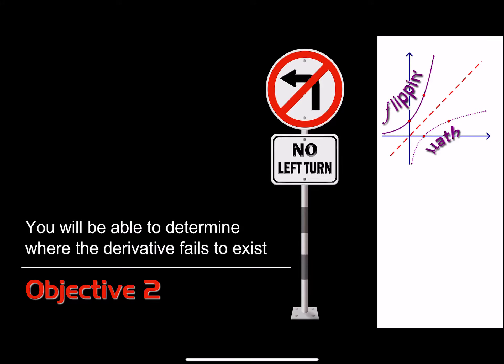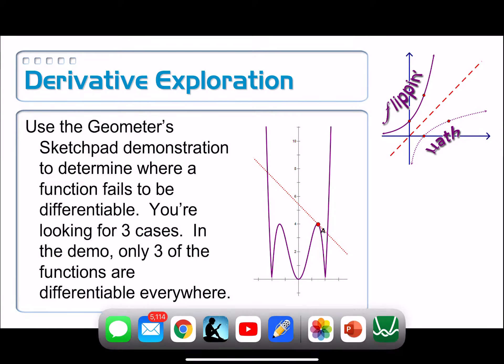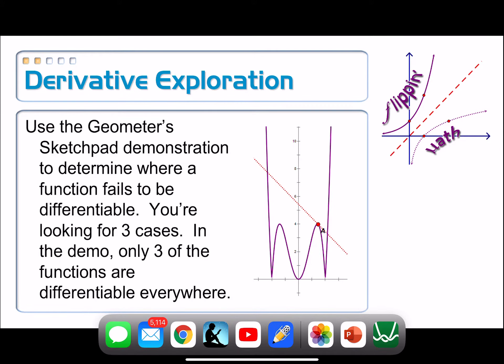The warm-up activity for this lesson hinted at the fact that for a given function you can't find the derivative everywhere. That's what Objective 2 is all about — you'll be able to determine where the derivative fails to exist. To figure out where that could possibly happen, we're going to do a little exploration on Desmos. There are three different cases where a derivative could fail to exist.